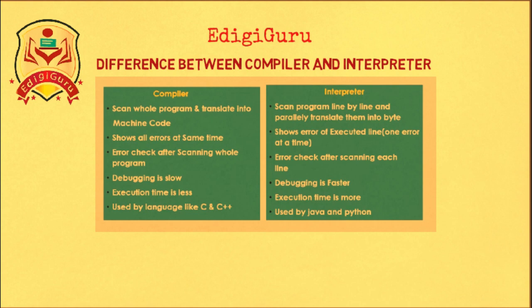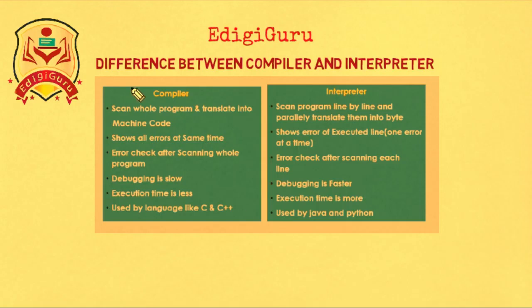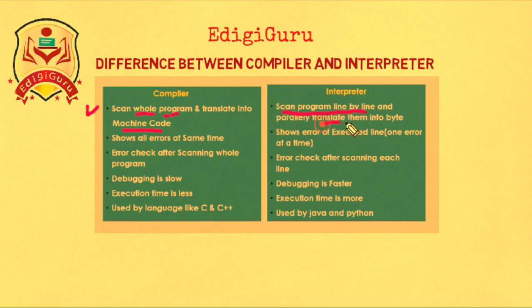There is a difference between compiler and interpreter. I have listed the differences in this diagram. The first point says that the compiler scans a whole program and translates it into machine code, whereas the interpreter scans a program line by line and translates it into machine code.